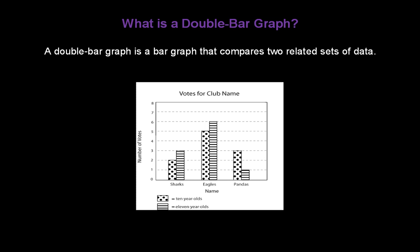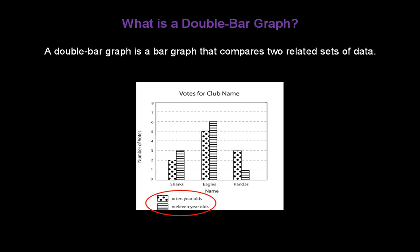Let's take a look at the graph on this page. It's a graph about votes for a potential club name. There are two bars over the sharks, two bars over the eagles, and two bars over the pandas — it's these two bars that make this a double bar graph. There's a key down at the bottom: the dotted bars indicate the number of votes from ten-year-olds, and the lined bar indicates the number of votes from eleven-year-olds for each club name.